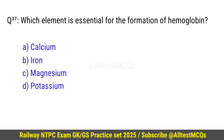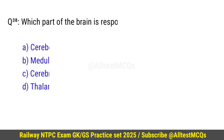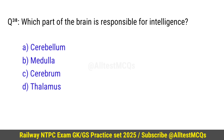Question number 37: Which element is essential for the formation of hemoglobin? Right option is B — Iron. Question number 38: Which part of the brain is responsible for intelligence? Correct option is C — Cerebrum.